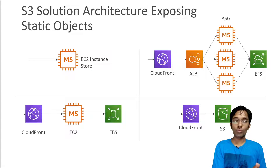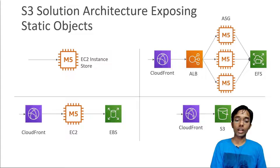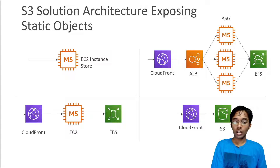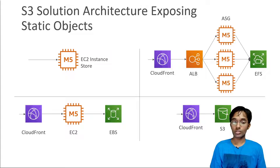Then we can go to a full-blown solution where we have CloudFront in front of an Application Load Balancer with a fleet of EC2 instances behind an Auto Scaling group. These EC2 instances need to share the same access to the same files, so EBS doesn't work in this use case. We have to use something like EFS as a network file system — it's POSIX-compliant, works for Linux instances, and it scales. This works, but it's quite expensive.